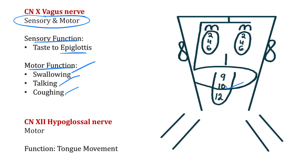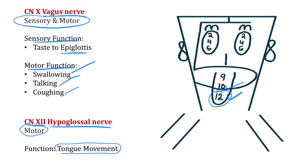Cranial nerve 12, the hypoglossal nerve, drawn on the tip of the tongue, is a purely motor cranial nerve responsible for movement of the tongue.